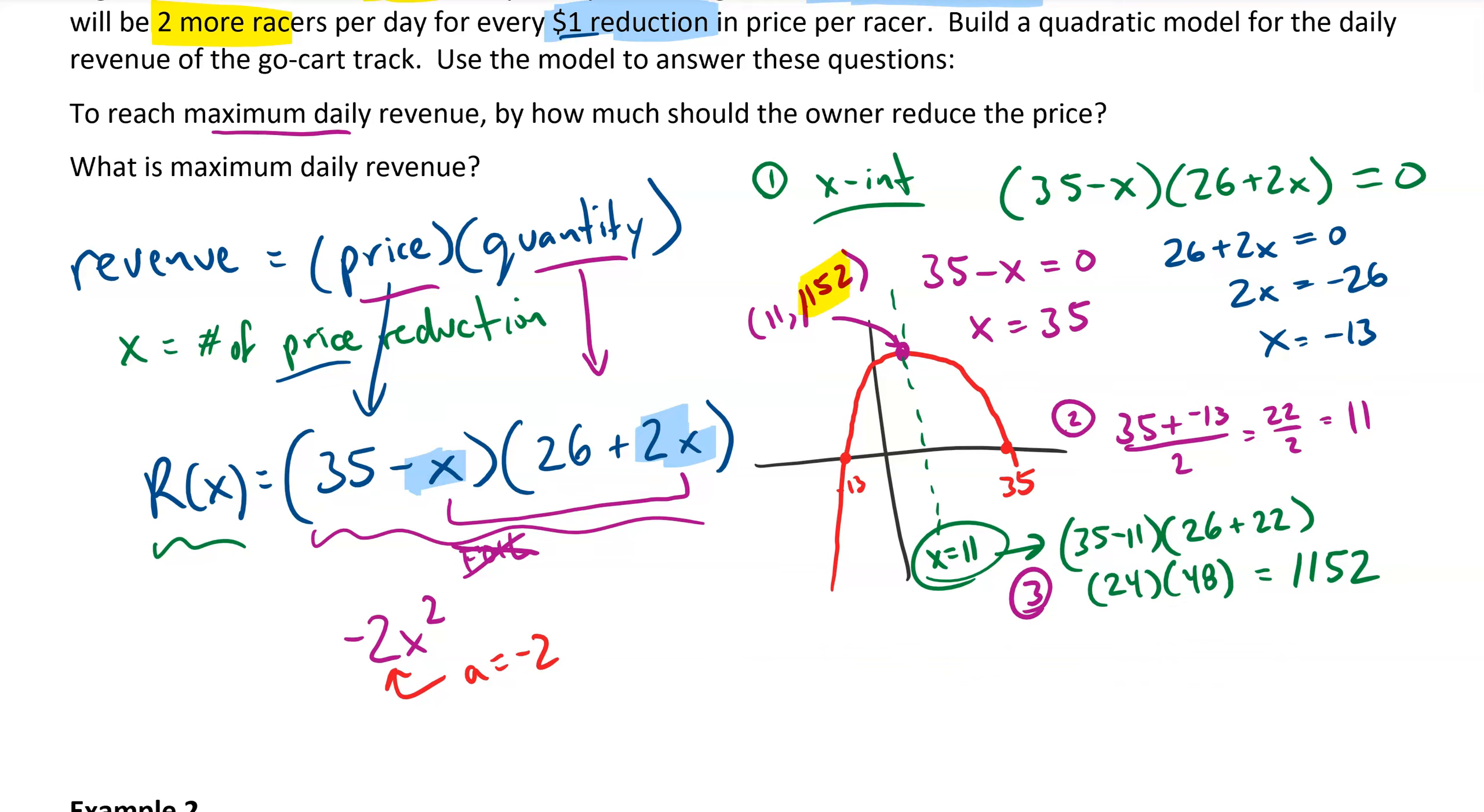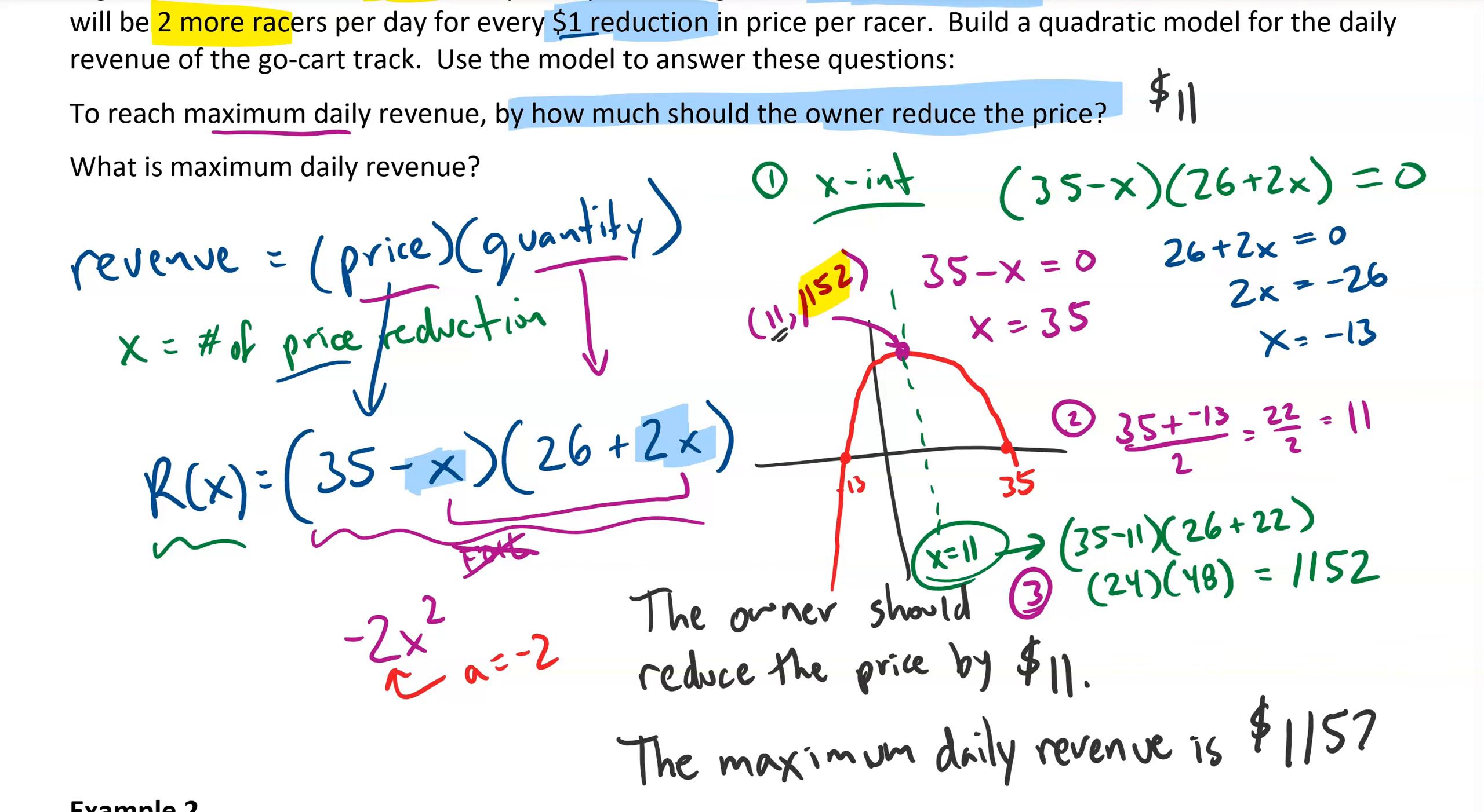To wrap up this problem, let's answer the specific questions being asked. How much should the owner reduce the price? The answer to that is $11. Remember, our value for x corresponds to price reductions. The owner should reduce the price by $11, and if they do, they'll achieve maximum revenue of $1,152.